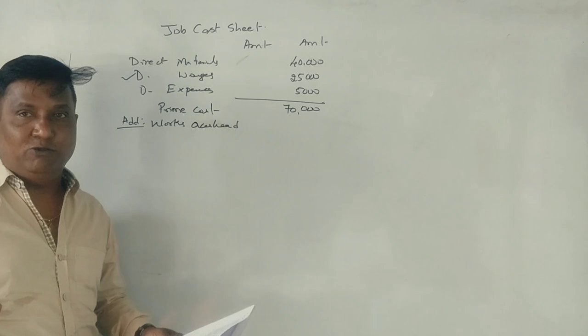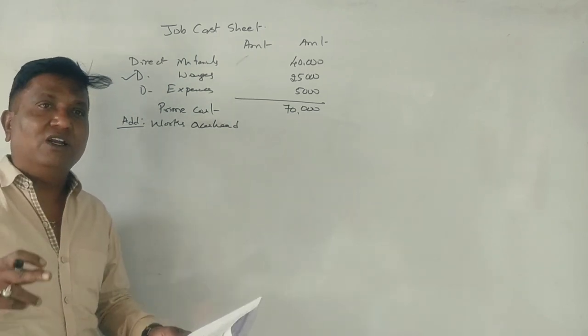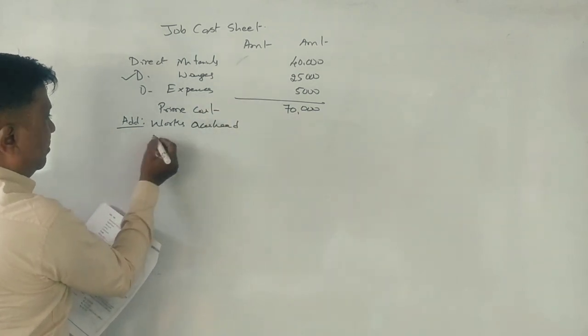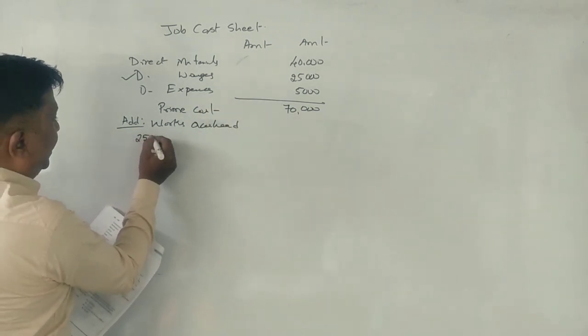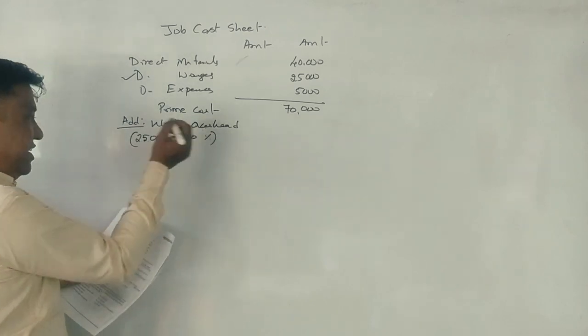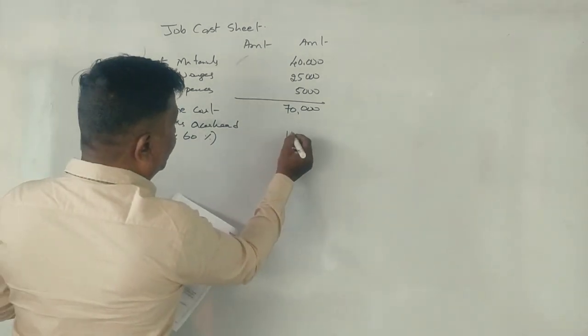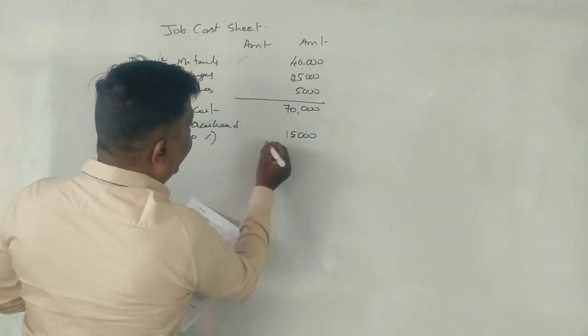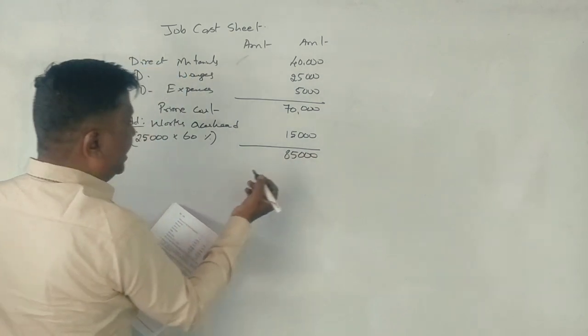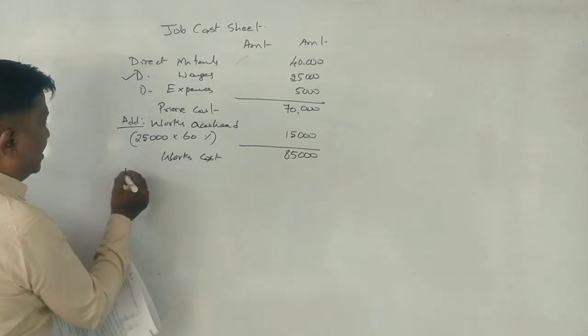Provide 60% of productive wages for works on cost. And direct wages, 25,000. What is it? It becomes 15,000. That's what we have, it is 85,000.